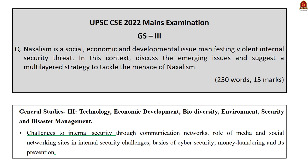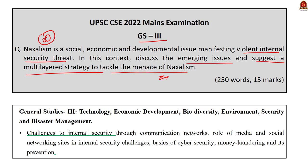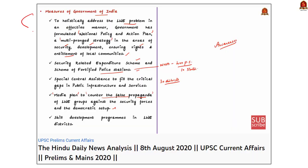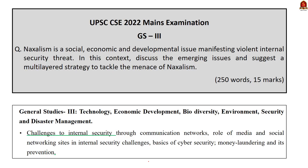Question number 20 in GS Paper 3: 'Naxalism is a social, economic and developmental issue manifesting as a violent internal security threat. Discuss the emerging issues and suggest a multi-layered strategy to tackle the menace of Naxalism.' The first part — social, economic and developmental issues that led to the growth of Naxalism — was covered in our 29th December 2020 Hindu News Analysis. The second part on steps to tackle Naxalism was covered in the same video. We also covered government measures to counter Naxalism in our 8th August 2020 Hindu News Analysis. Using these two videos, you can arrive at a good answer.